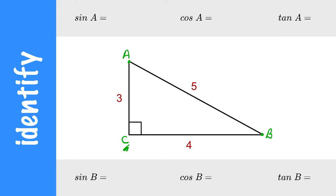So from A's perspective, sine, which is opposite over hypotenuse, would be 4 compared to 5.